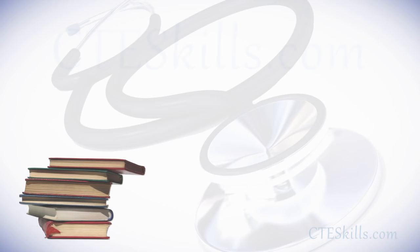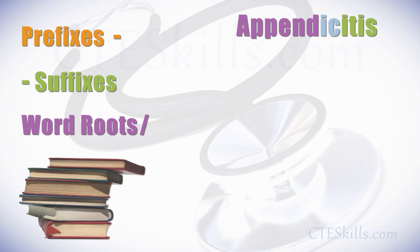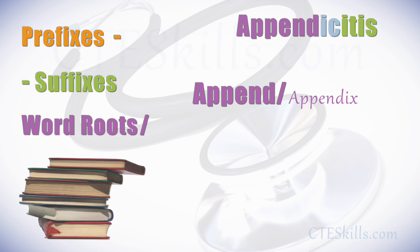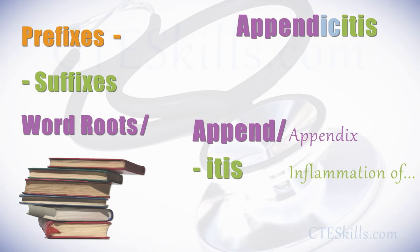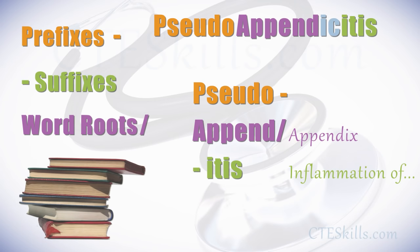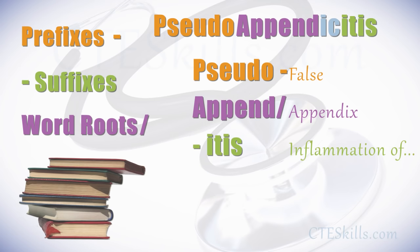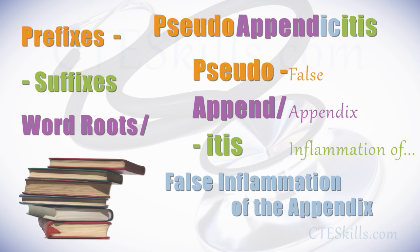Let's take a look at another example: appendicitis. The word root is 'append', which is the appendix. The suffix is '-itis', meaning inflammation or inflammation of. Appendicitis is the inflammation of the appendix. If you add the prefix 'pseudo' to appendicitis, you get the word pseudo-appendicitis. Pseudo means false, so pseudo-appendicitis is a false inflammation of the appendix.